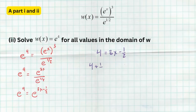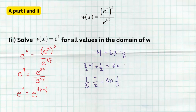Adding 1/2 to both sides: 4 + 1/2 = 3x. Writing 4 as 8/2, we get 8/2 + 1/2 = 9/2. Dividing both sides by 3 is the same as multiplying by 1/3, giving (9/2)(1/3) = 9/6, which reduces to 3/2. So x = 3/2. Nice and simple.